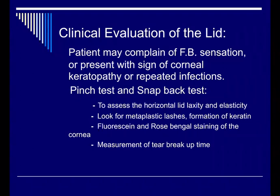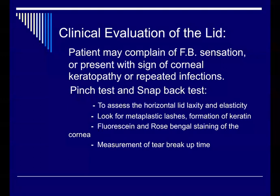We assess medial and lateral laxity: pull the lower outer part of the lid medially and check its position relative to the cornea and pupil while asking the patient to look straight forward. If it reaches the pupil, that is mild to moderate; if it exceeds to the pupil area, that means severe. The same is done on the lateral side. Also measure tear breakup time, apply fluorescein and rose bengal staining from the cornea, and check the position of the lashes.